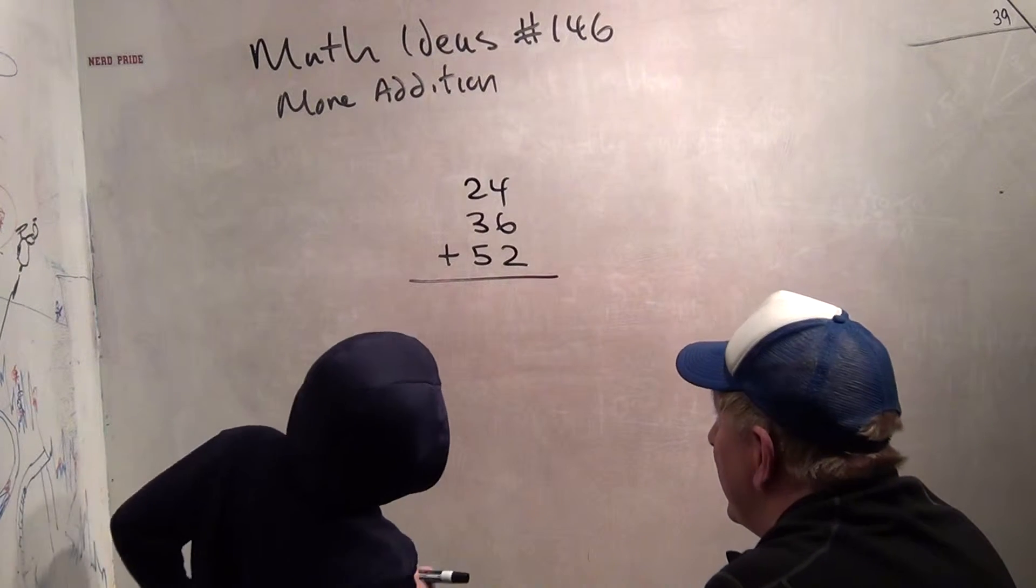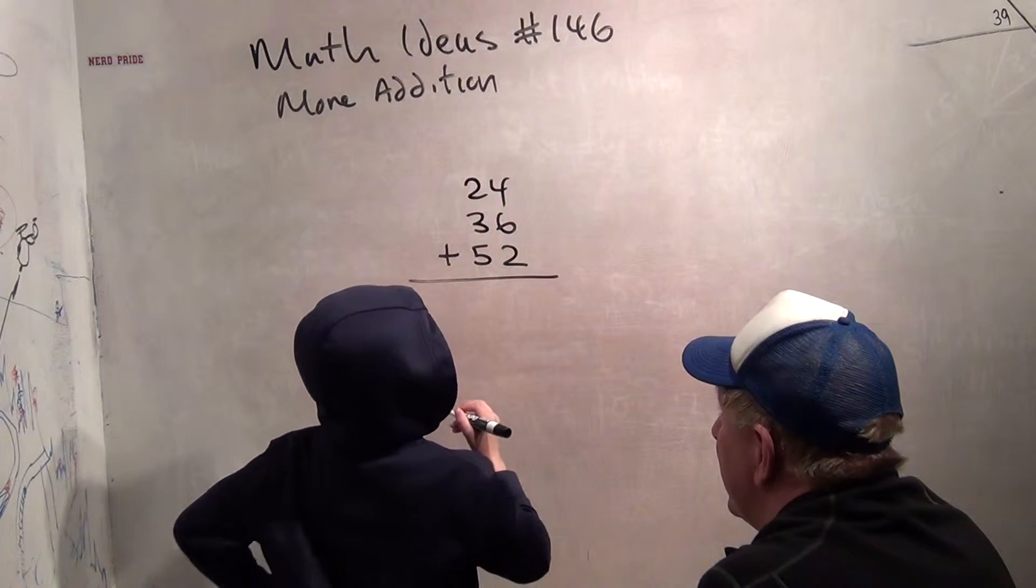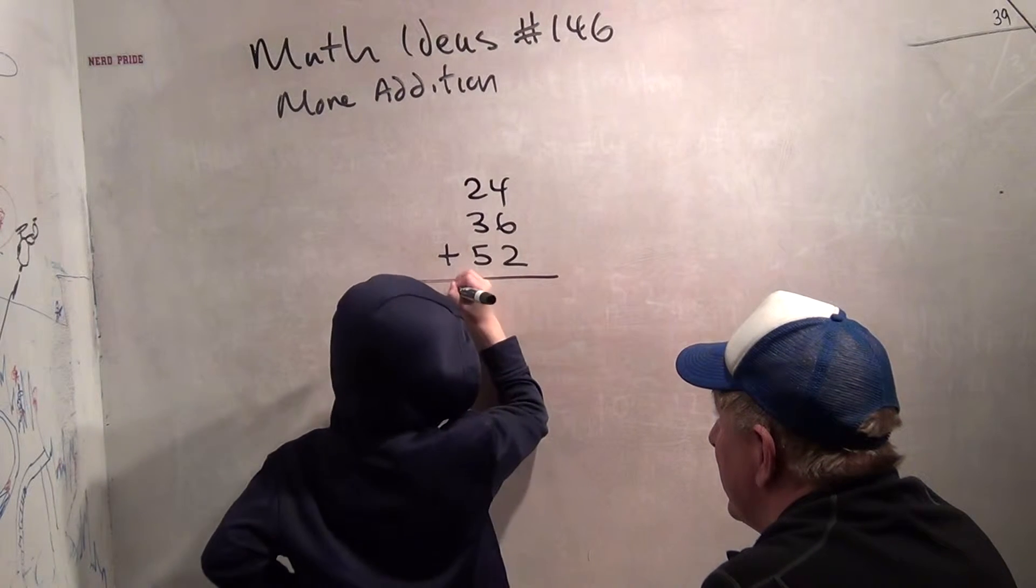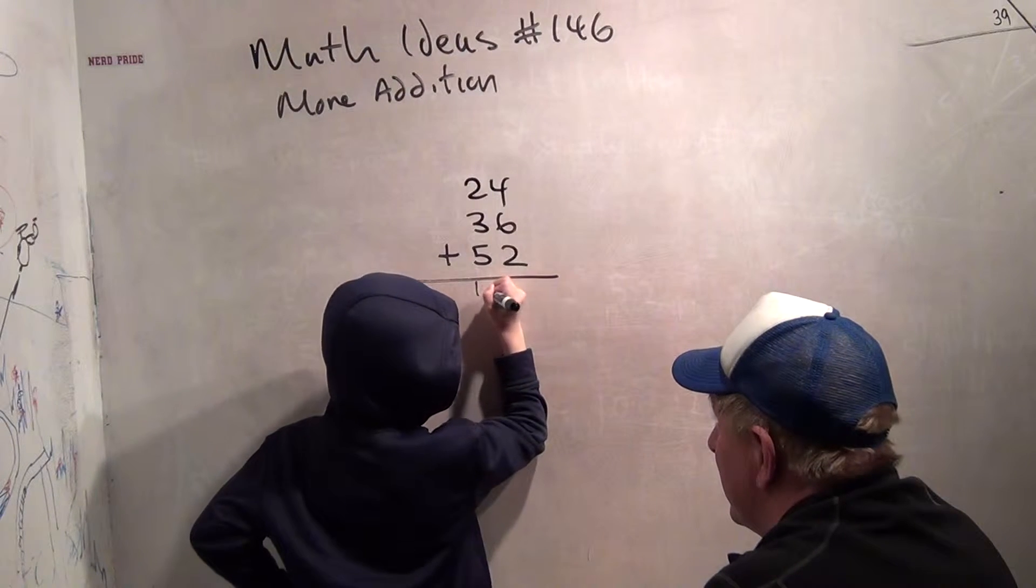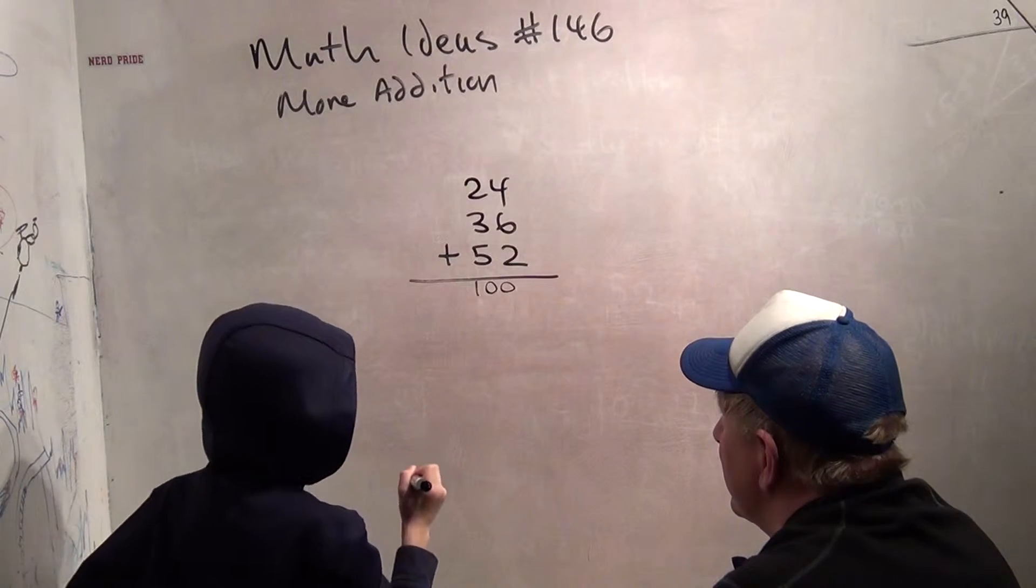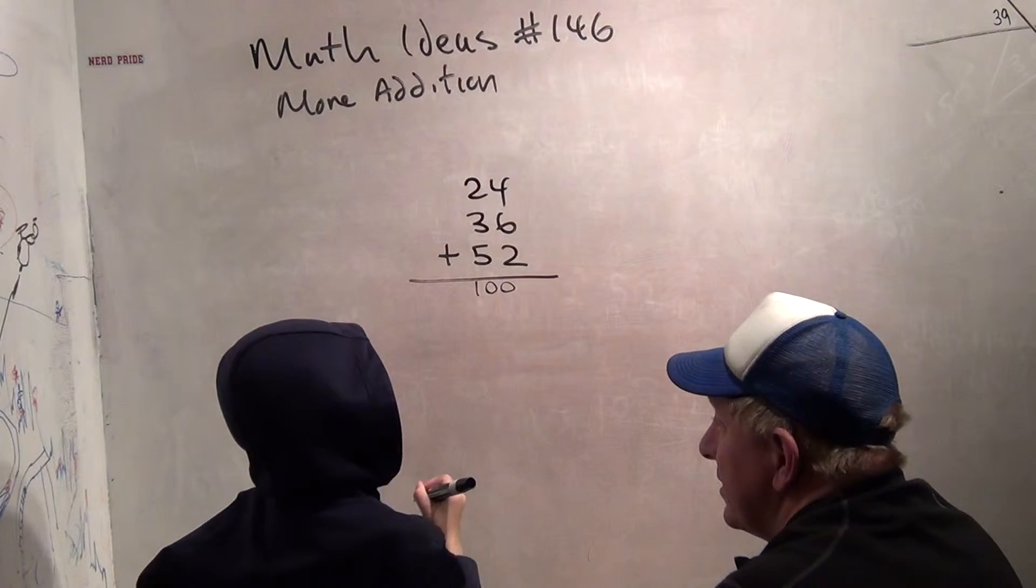Okay, 20 plus 30 plus 50 is 100. 4 plus 6 is 12.